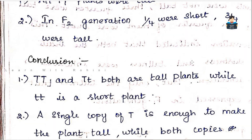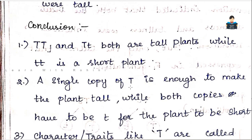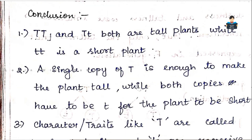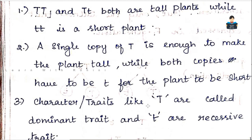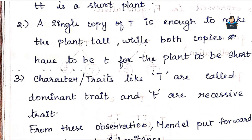The two tall plants represent Capital T. The short plant represents small t small t. A single copy of Capital T is enough to make the plant tall, while both copies must be small t for the plant to be short. So Capital T is the dominant trait and small t is the recessive trait.